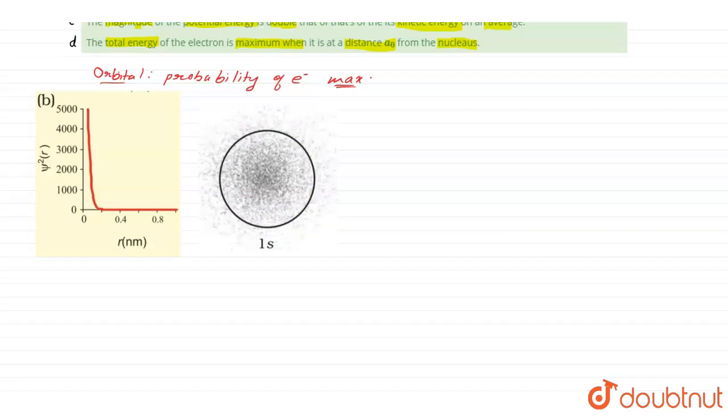Let's see, in the diagram, this is graph between psi square and the radius of atom. Now, if radius increases, the value of electron probability, probability density decreases, you can see here, is decreases.